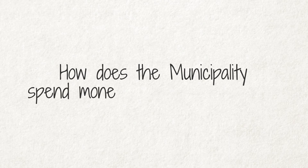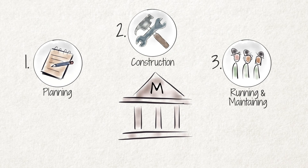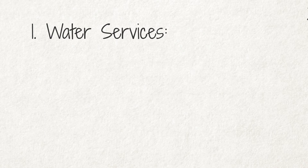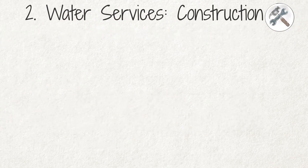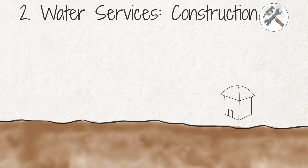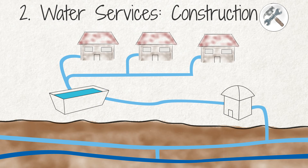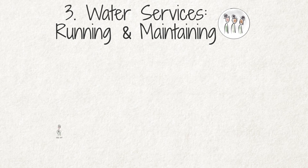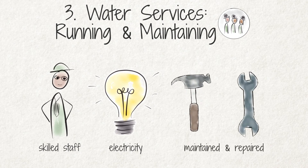How does the municipality spend the money it has on services? The municipality has to take many different steps in order to provide services, and each step has costs associated with it. These costs get paid from the overall funds available to the municipality. Using water services as a practical example: firstly, the municipality needs to plan the exact nature of the water supply system and how much it will cost. Secondly, the water service needs to be constructed, which could require anything from a dam to a borehole, a purification plant, a water reservoir, pumps, meters and a network of underground pipes. Thirdly, running the water system requires skilled staff and electricity. The system also needs to be regularly maintained and repaired when necessary, which also requires tools and materials.